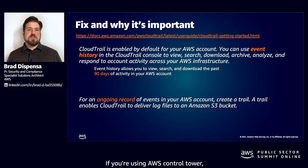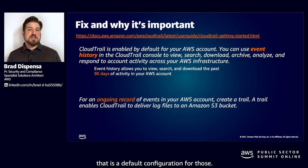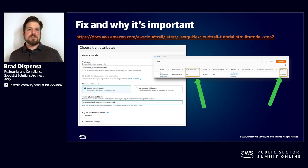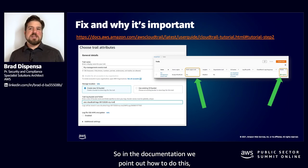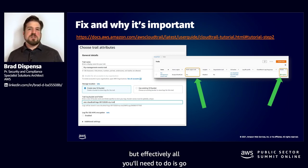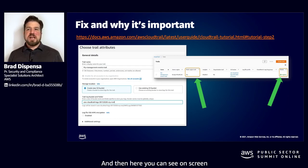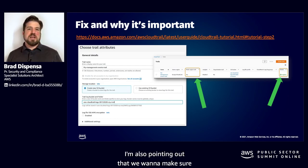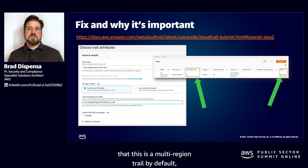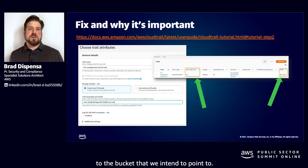If you're using AWS Control Tower or landing zone configurations, that is a default configuration for those. The fix is fairly simple: go and create the trail, specify the bucket you need to configure, and make sure this is a multi-region trail by default while pointing to the intended bucket.